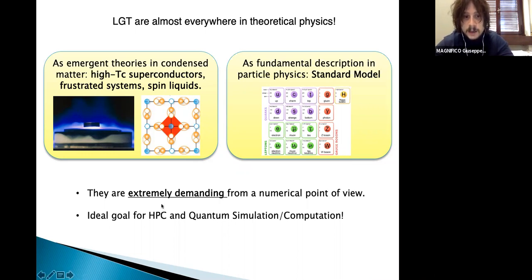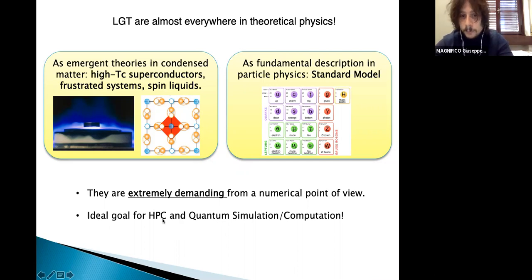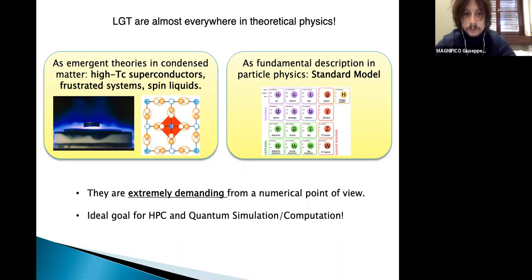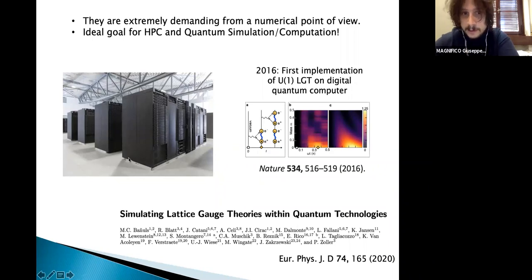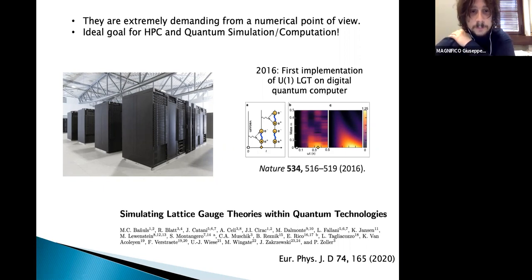These models are extremely demanding from a numerical point of view, because you have to consider all different types of degrees of freedom — quantum matter, quantum gauge fields, and their interactions. They represent an ideal goal for developing classical algorithms, but also for benchmarking quantum simulation, quantum computation, and for realistic quantum simulation on actual and future quantum platforms. Our idea is to develop three-tensor network algorithms to run on classical supercomputing facilities like Cineca in Italy, but also to describe lattice gauge theory models in terms of degrees of freedom implementable on a realistic quantum simulator.